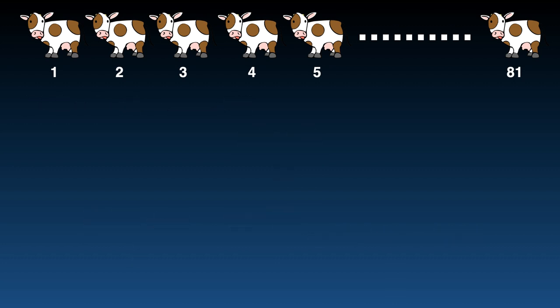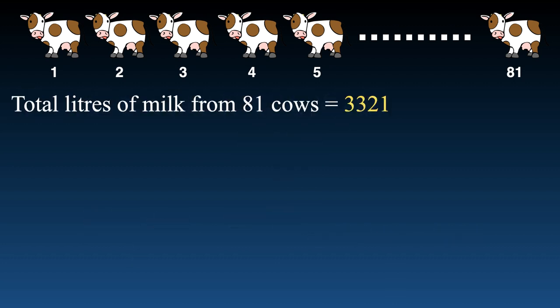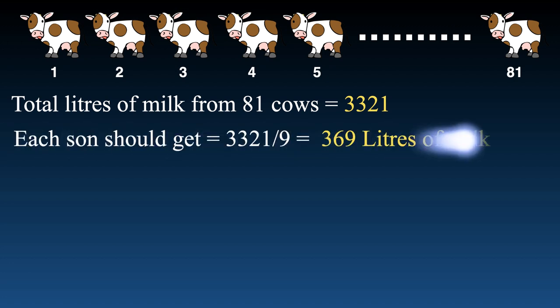In the next step, find how much milk each son should get. Each son should get 3321 ÷ 9, which equals 369. Thus each son should get 369 liters of milk.